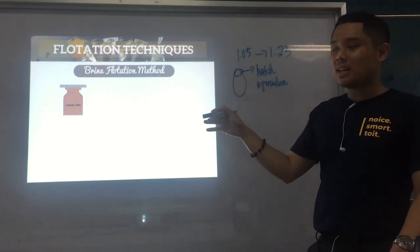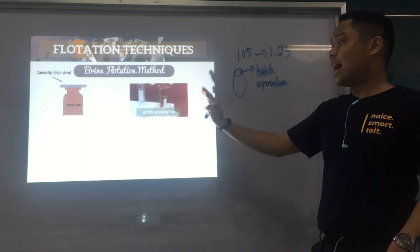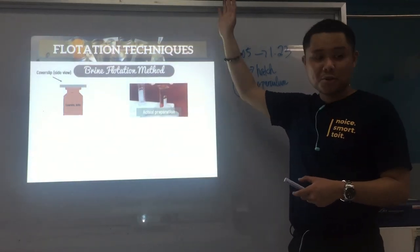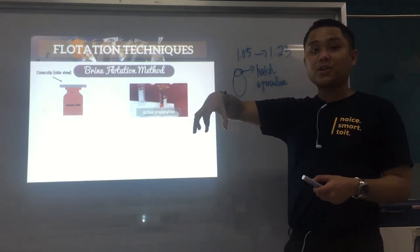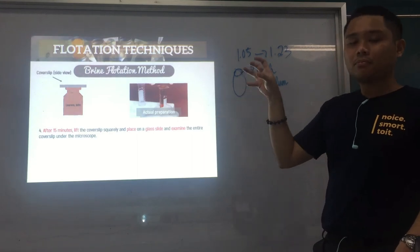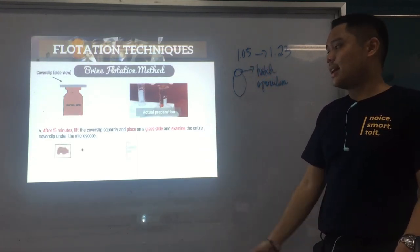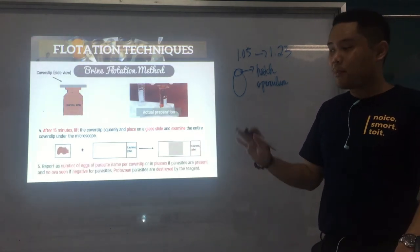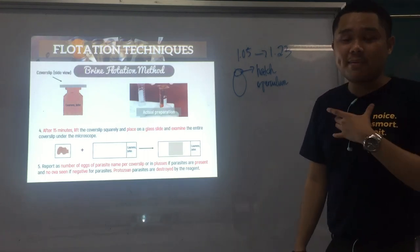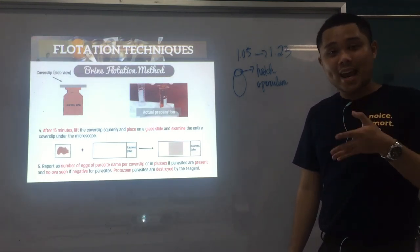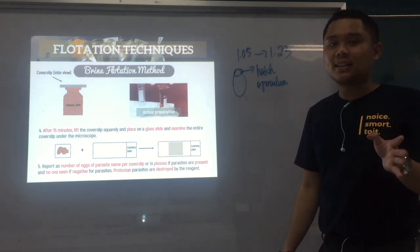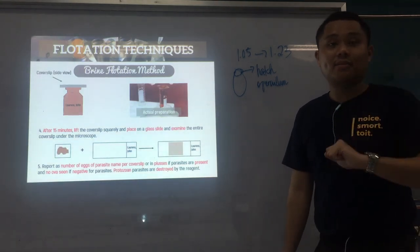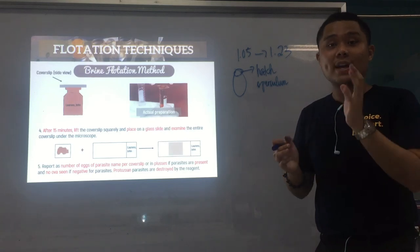Here is how it looks: the coverslip sits at the top of your vial. The parasites rise to the top and the coverslip catches those parasites. After 10 to 15 minutes, get the coverslip and place it on a glass slide — this now contains the parasites. Examine under the microscope and report: for example, '58 Ascaris lumbricoides eggs seen per coverslip,' or 'no ova seen.' Note that protozoan parasites are destroyed by the reagent. That's the procedure for our brine flotation method.